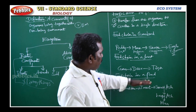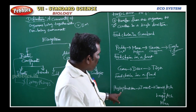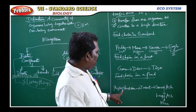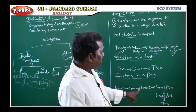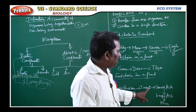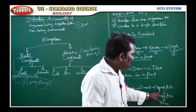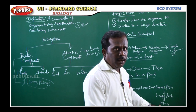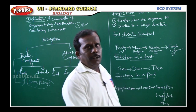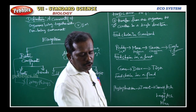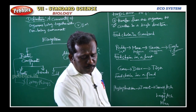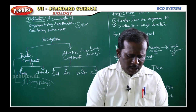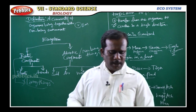For the food chain in a pond: phytoplankton (plants) is the first trophic level; insect is the second; small fish is the third; large fish is the fourth; and man is the fifth trophic level. So, the position of an organism in a food chain is called the trophic level.